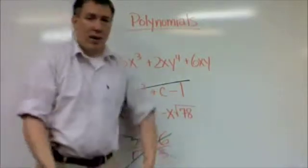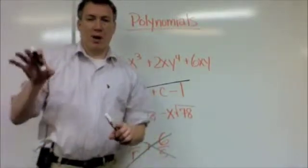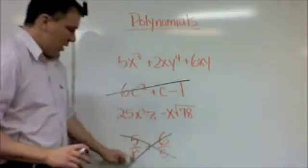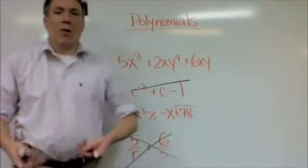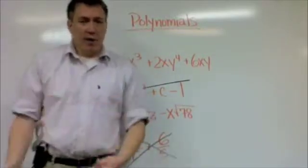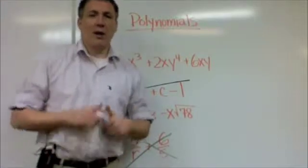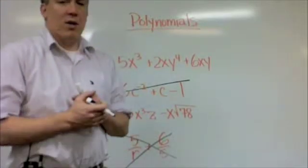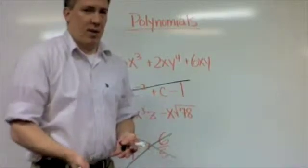Now, this bottom one, if I had flipped it, it was r over 5 and s over 6, where I'm not dividing by r or s. I'm dividing by numbers. Then it's okay. It's a polynomial then, because you can divide by numbers, just not letters in a polynomial.